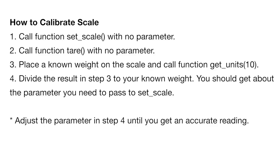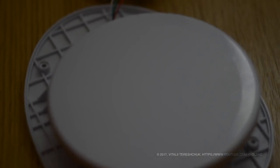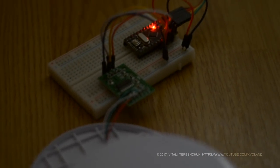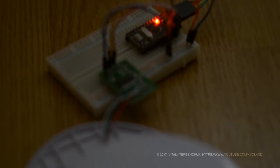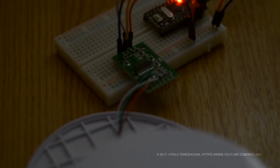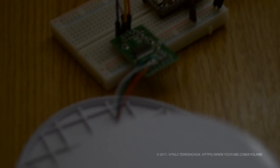Step 3: Place a known weight on the scale and call function get_units 10. Step 4: Divide the result in step 3 by your known weight. You should get about the parameter you need to pass to set_scale. Adjust the parameter in step 4 until you get an accurate reading. Everything is simple.